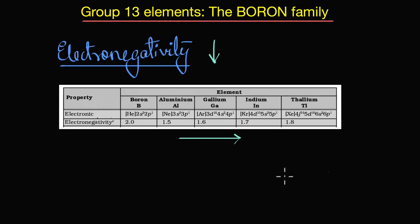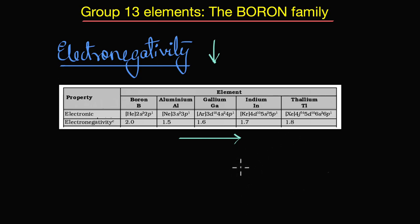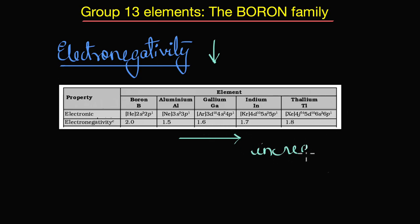Nuclear charge increases with increasing atomic number because of more protons and neutrons in the nucleus. But because the d and f electrons do a thinly veiled job of shielding, the nucleus is still capable of attracting an external pair of electrons towards itself. The increase in electronegativity is not very drastic, but it is important to note that electronegativity in fact increases in group 13 elements.